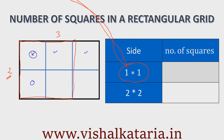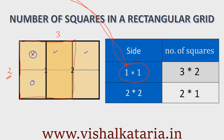So total number of 1 by 1 squares will be 3 by 2, which is 6. For the 2 by 2 squares, only 1 can fit along the width and 2 along the length. So the total number of 2 by 2 squares will be 2 multiplied by 1, which equals 2. The total number of squares will be equal to 8 in this case.